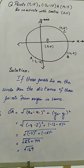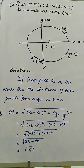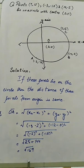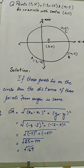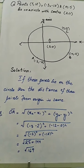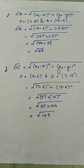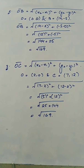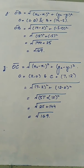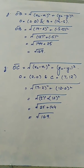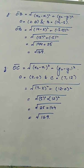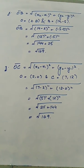First we calculate the distance OA using the formula root of (x2 minus x1) whole square plus (y2 minus y1) whole square. The coordinates of A are (-3, -12) and O are (2, 0), giving the answer root 169. Similarly for OB, with O at (2, 0) and B at (14, -5), the distance is also root 169. The same calculation for OC gives root 169. Since the distance of all three points from the center is equal, it is proved that these three points lie on the circle.